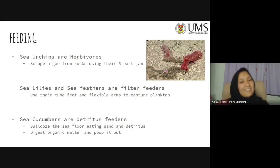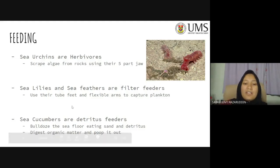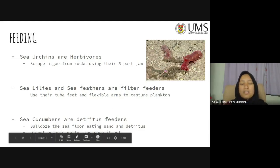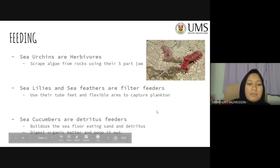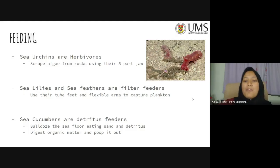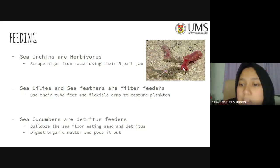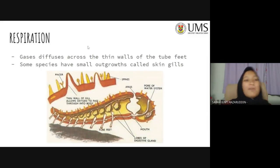Sea urchins are herbivores — they eat plants and scrape algae from rocks using their five-part jaw. Sea lilies and sea feathers are filter feeders, using their tube feet and flexible arms to capture plankton. Sea cucumbers are detritus feeders — they bulldoze the sea floor, eating sand and detritus, digesting organic matter and excreting it out. You can see a sea cucumber eating sand, and what may be a trail of waste behind it.